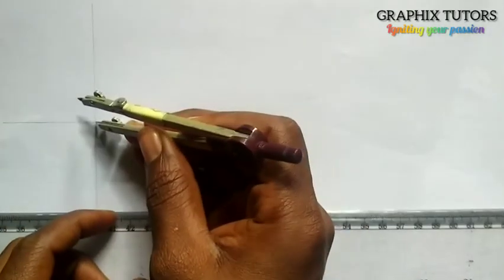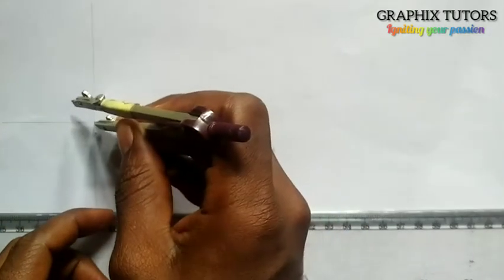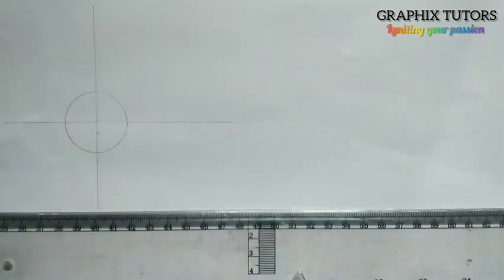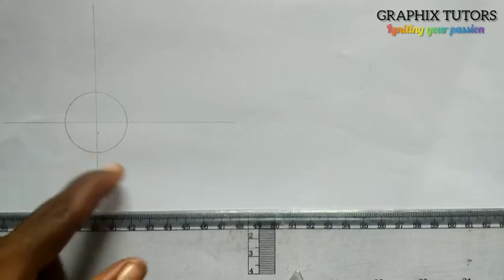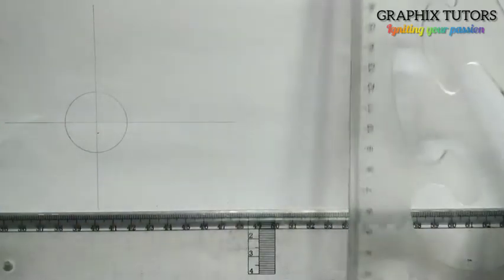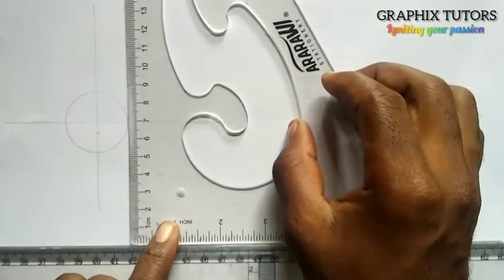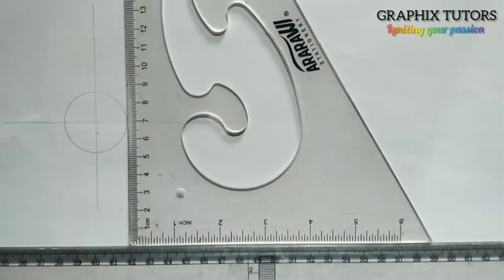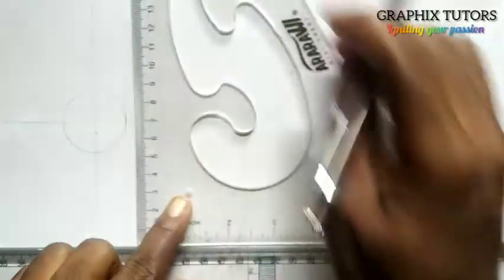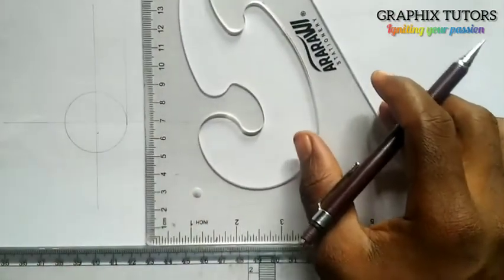I'll place the compass here at the point where the lines meet and draw the circle. Now I'm going to project this upward with my set square. I'll project both sides upward.